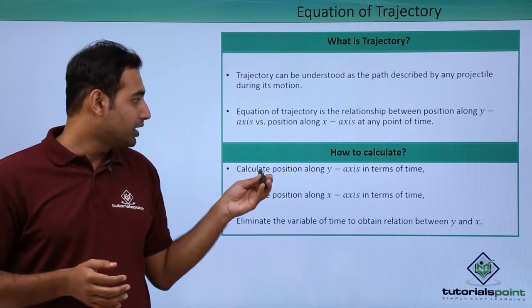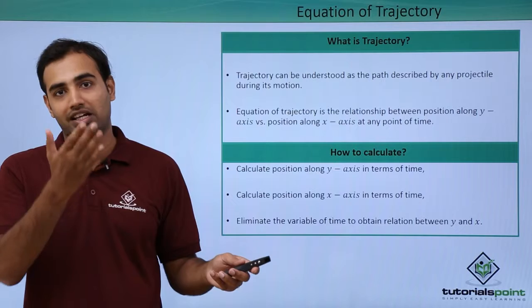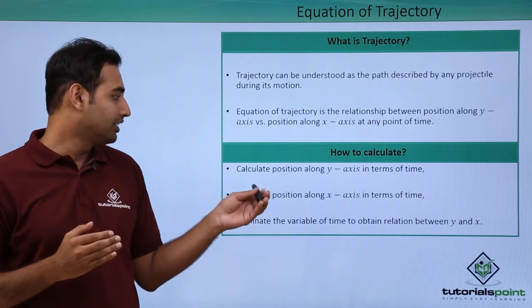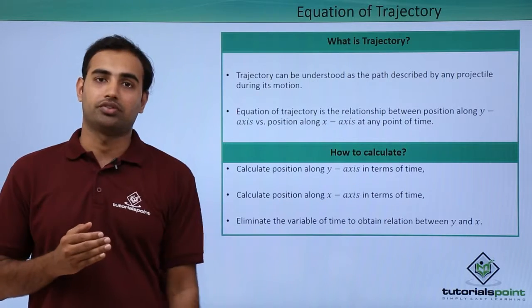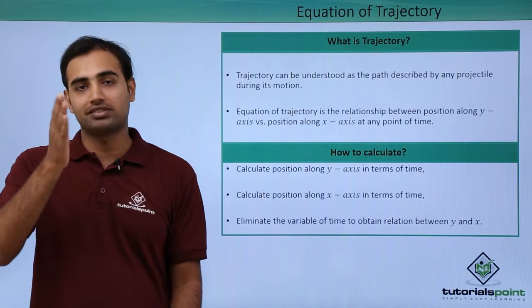So the first thing we do is, we write position along y-axis in terms of time using second equation of motion. Sy is equal to uyt plus half ay t square. And then we calculate positions along x-axis also in terms of time which is Sx is equal to uxt plus half ax t square.